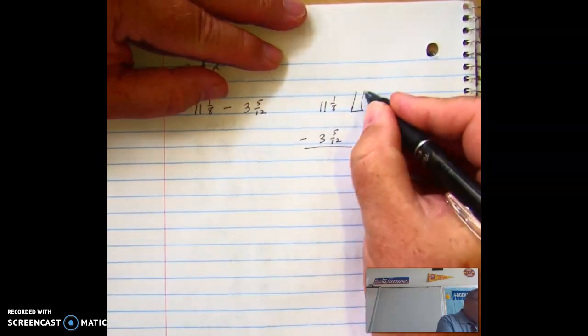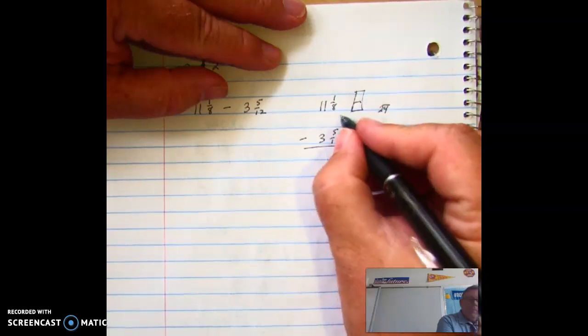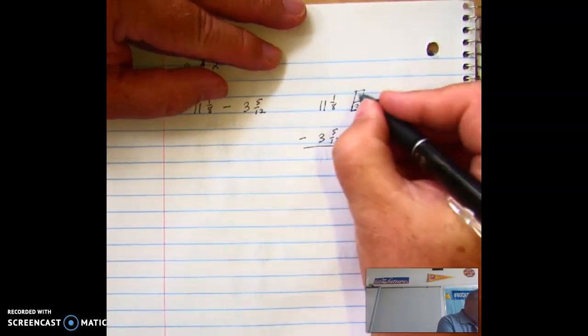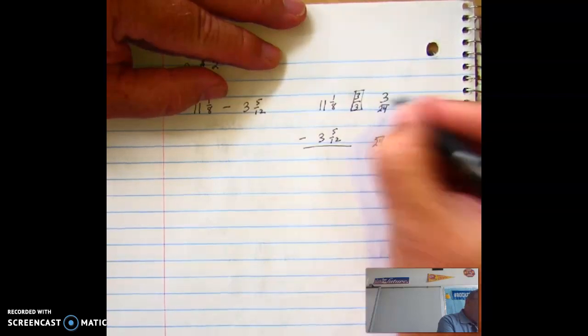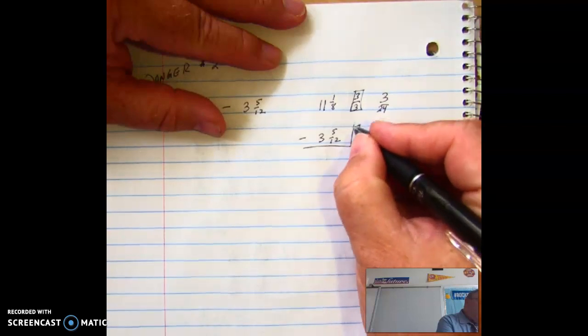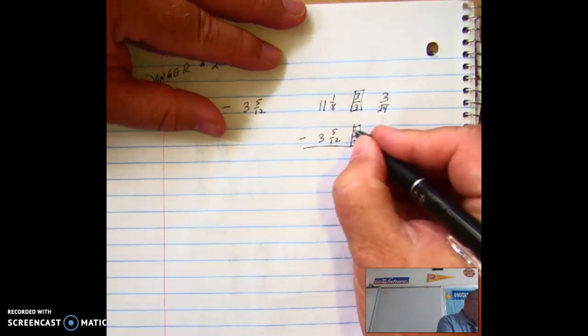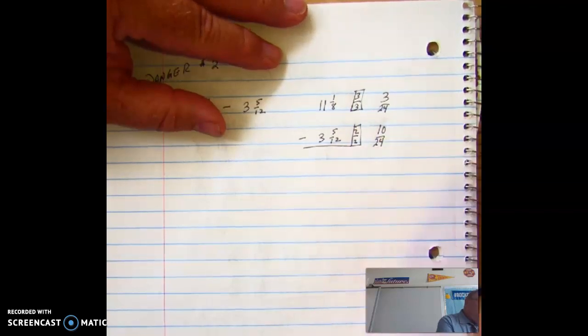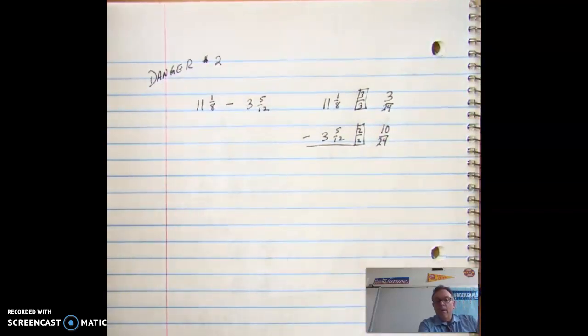I need a common denominator. So for 8 and 12, I'm going to go with 24. And that means, what do I multiply 8 by to get 24? 3. Numerator, 3. What do I multiply 12 by to get 24? 2, 2. 5 times 2 is 10. Okay. So what I would like you to do is take a look. Everything is perfect so far. I have done amazing.